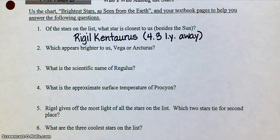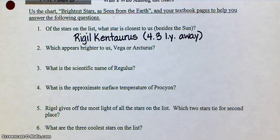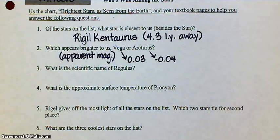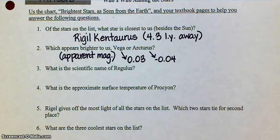Number two: which appears brighter to us, Vega or Arcturus? Well, 'appears brighter' is talking about apparent magnitude. So we need to go to our chart and look up the apparent magnitude of Vega and Arcturus. Vega's apparent magnitude is 0.03; Arcturus has an apparent magnitude of negative 0.04. Remember that with magnitudes, the smaller the number, the brighter the star. So Arcturus is actually the one that appears a little bit brighter, because its number is smaller.